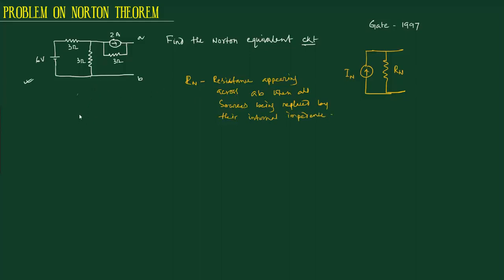The voltage source has internal impedance zero, so we short circuit it. The current source has internal resistance infinite, so we open circuit it. This will be point A and this will be point B. This will be 3 ohm, this will be 3 ohm, this will be 3 ohm. So Rn equals 3 parallel 3 plus 3, that will be 1.5 plus 3, this will be 4.5 ohm.